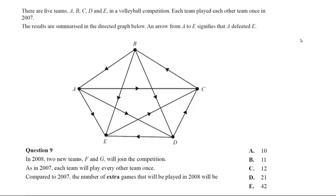So the first one here is looking at five teams that are playing a volleyball competition, each team playing each other once in 2007. We've got a directed graph shown below. Now this graph doesn't actually give us any information for this question, but we can see from the graph it is actually a complete graph.